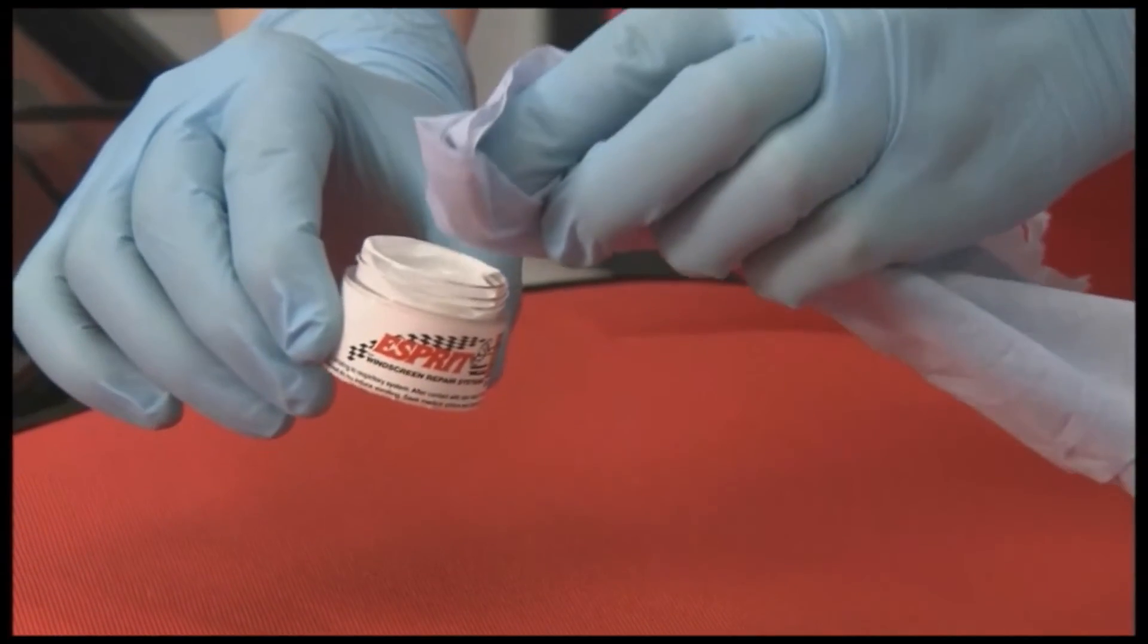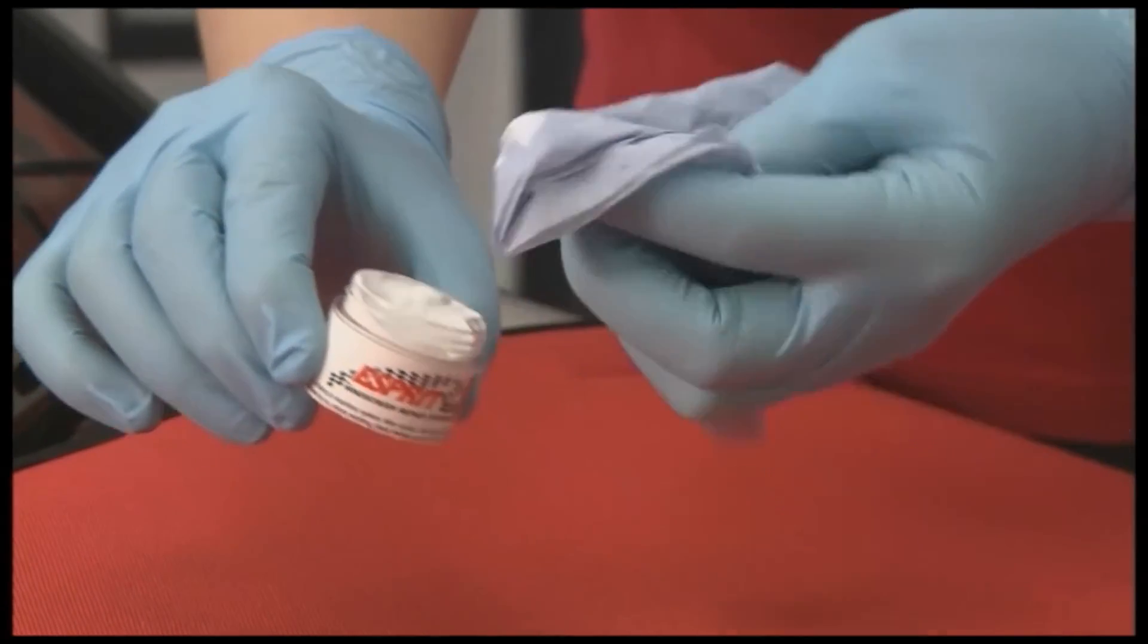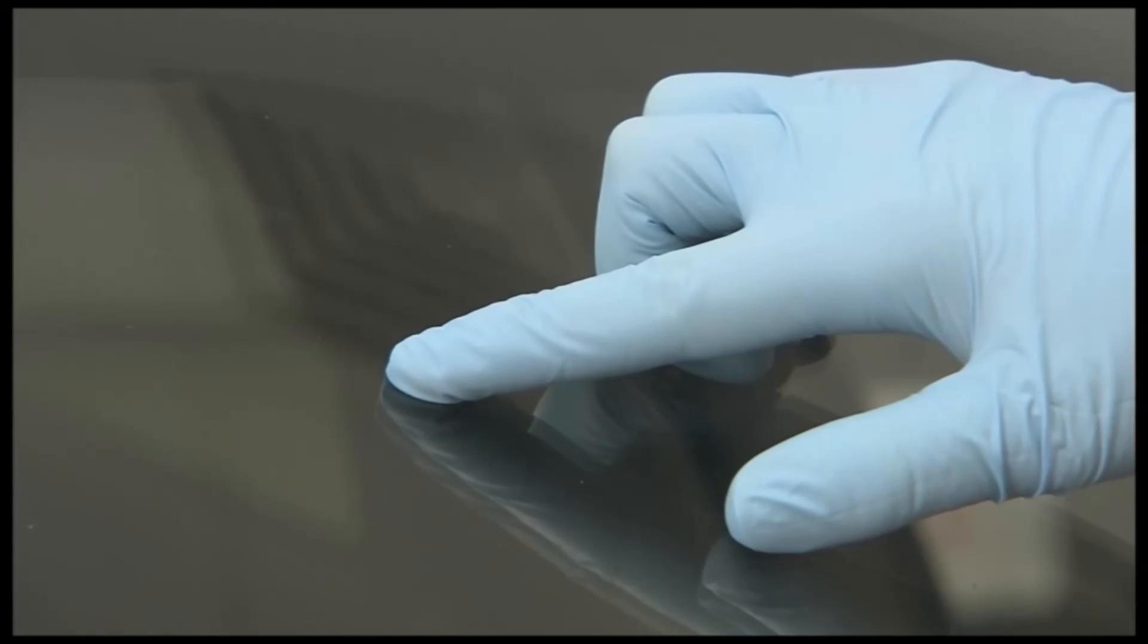A drop of Esprit pit fill polish is applied to the repaired area, which is polished with a very soft cloth or polishing tissue until clear. The star brake is now repaired.